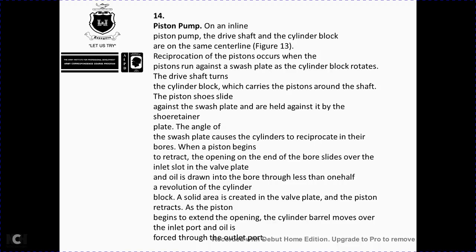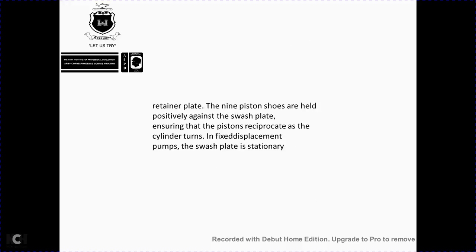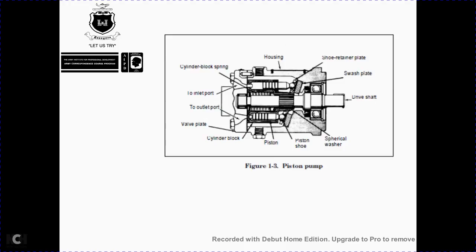As the cylinder block rotates to the solid side of the valve plate, the piston begins to extend, and oil is forced through the outlet port. Major components of the piston pump include the housing with bearing support, drive shaft, rotating group, shaft seal, and valve plate with inlet and outlet ports. The rotating group includes the cylinder block splined to the drive shaft, a cylindrical washer, and typically nine pistons each with a shoe. The swash plate and shoe retainer hold the pistons positively against the swash plate.